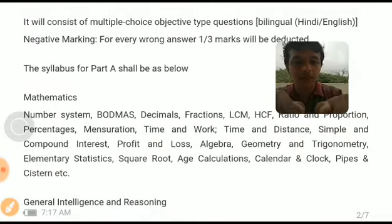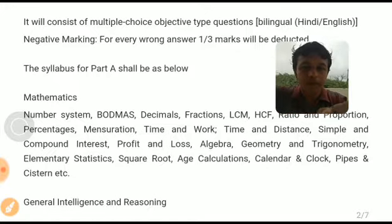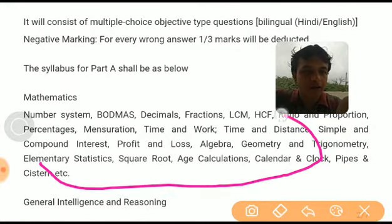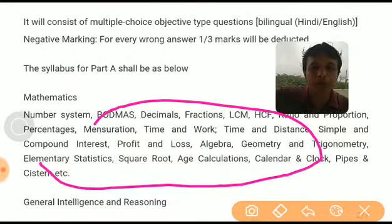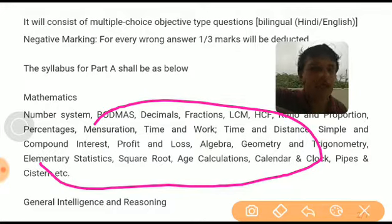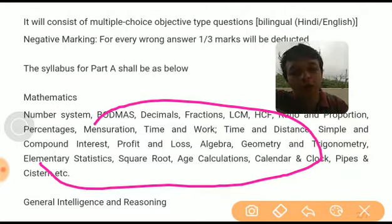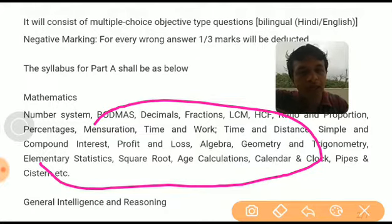The syllabus for the first topic, mathematics, includes: number system, BODMAS, decimals, fractions, LCM and HCF, ratio and proportion, percentage, mensuration, time and work, time and distance, simple and compound interest, profit and loss, algebra, geometry, trigonometry, elementary statistics, square root, age calculations, calendar and clock, pipes and cisterns, etc. These topics are essentially quantitative aptitude, so if you are good enough in quantitative aptitude, you will have a strong advantage.